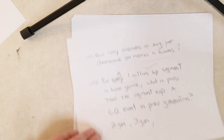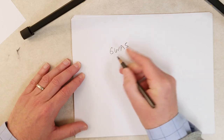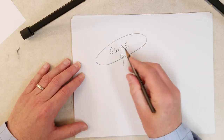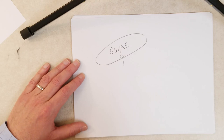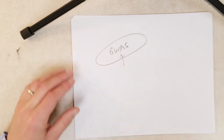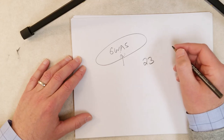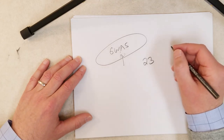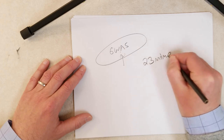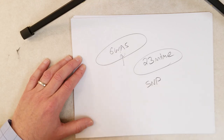SNP haplotype blocks are important for genome-wide association studies, which we'll briefly discuss in the next video or the one after. We'll also take a look at an SNP genotyping service called 23andMe and how they use SNP profiles to give ancestry and health information — we'll focus on the health information side.